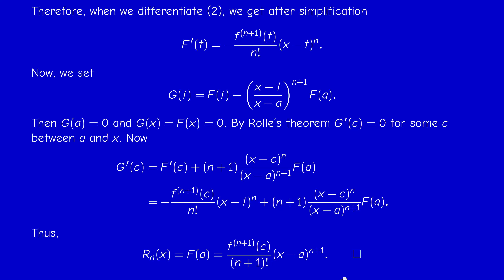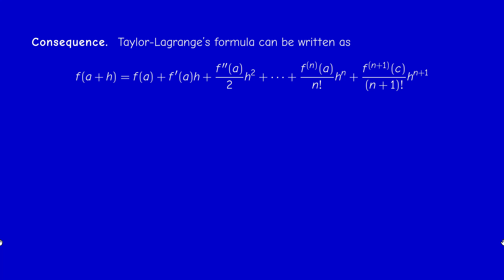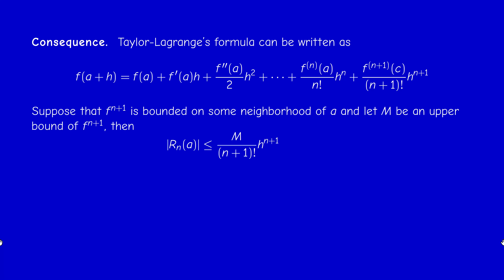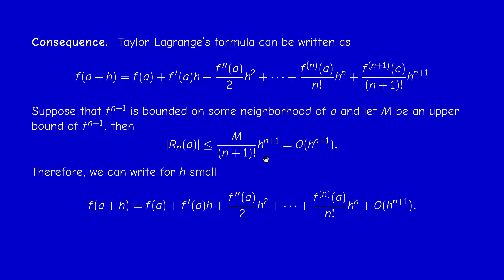That concludes the proof of Taylor-Lagrange. With x = a + h, the remainder has the form f^{(n+1)}(c) · h^{n+1} / (n+1)!. If in addition f^{(n+1)} is bounded near a by a constant M, then the remainder is O(h^{n+1}) — the same estimate as in Taylor-Cauchy, though here boundedness must be assumed explicitly since f^{(n+1)} is not necessarily continuous.